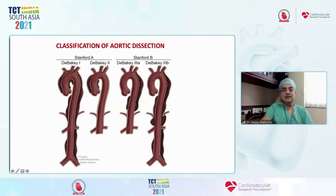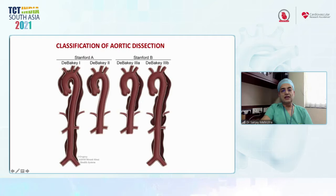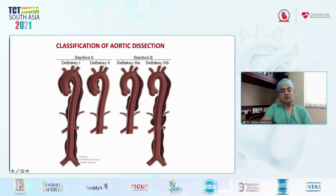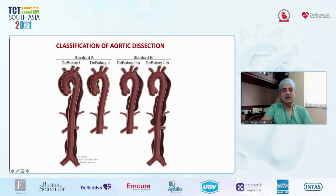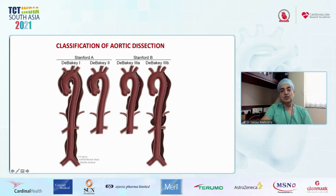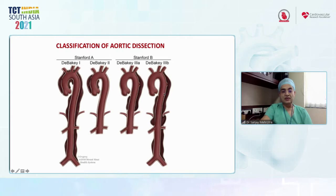The classification of aortic dissection includes proximal dissection, called Stanford type A, and distal dissection, called Stanford type B. This was also classified by Dr. DeBakey as class one, involving the whole aorta; class two, involving the proximal aorta; class three A, distal; and class three B, which extends all the way into the abdominal aorta.